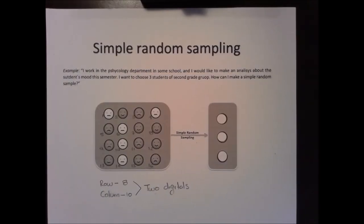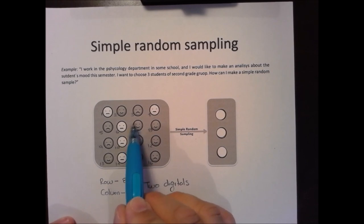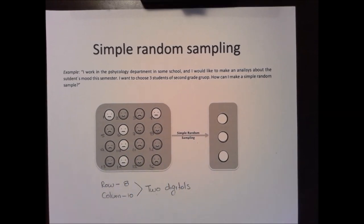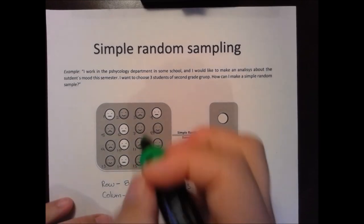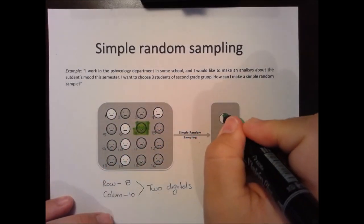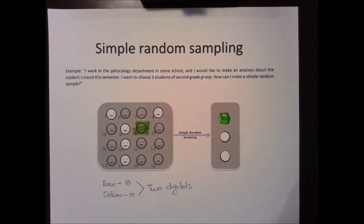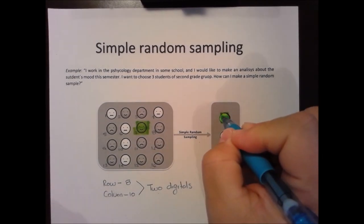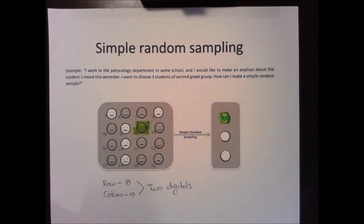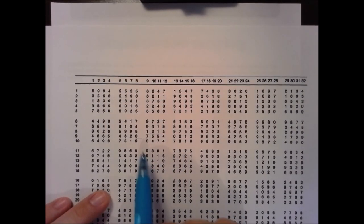The first student selected is student number 07 — and they are happy. Let's continue checking numbers: 55, 40, 61, 29, 66, 34, 25, 19 — and then 13. We have a student number 13.